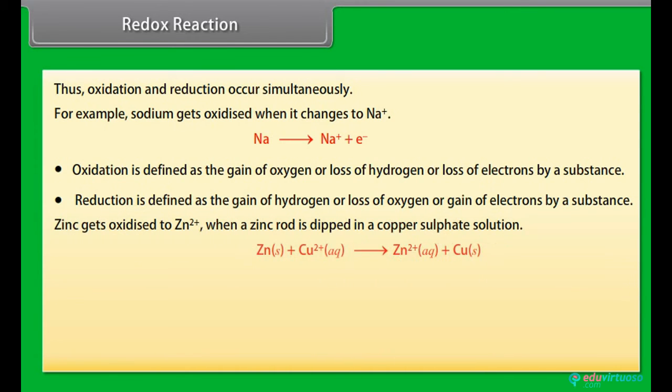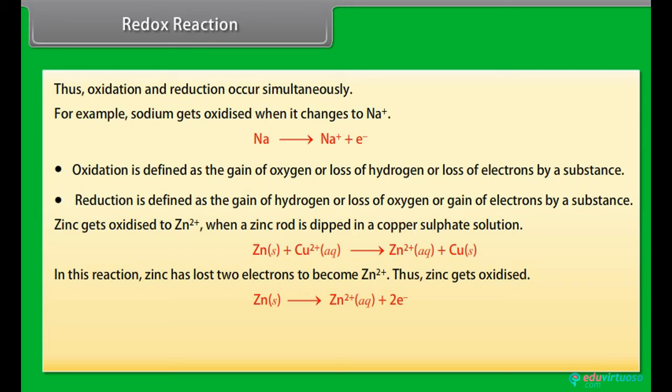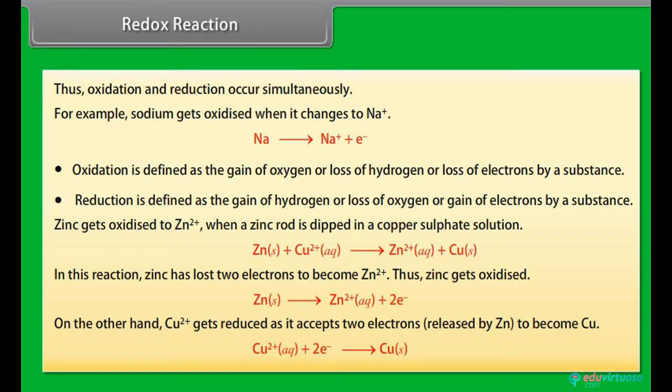Zinc gets oxidized to Zn2+ when a zinc rod is dipped in a copper sulfate solution. In this reaction, zinc has lost two electrons to become Zn2+. Thus, zinc gets oxidized. On the other hand, Cu2+ gets reduced as it accepts two electrons released by Zn to become Cu.